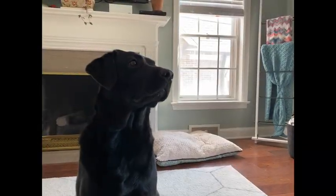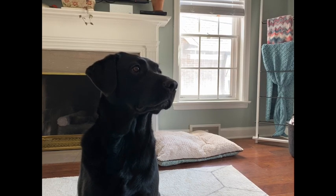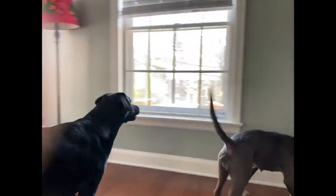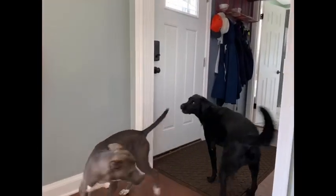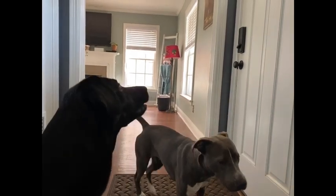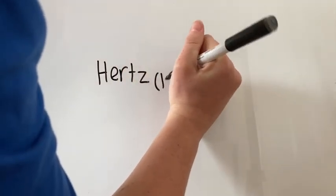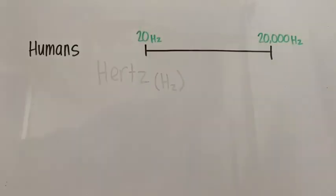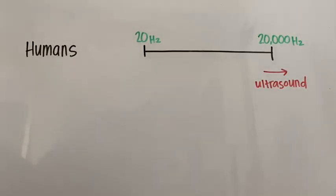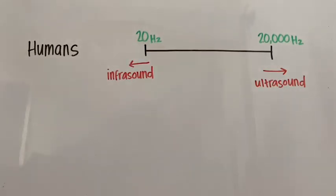Animals also use different frequencies to communicate. Have you ever observed a dog seemingly listening and reacting to something you can't hear? There's a reason why dogs and cats know when someone is at the door before you do. Many animals can hear sound frequencies that we cannot. Frequency is measured in a unit called hertz. Humans can hear between 20 hertz and 20,000 hertz.